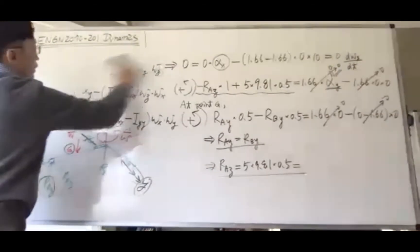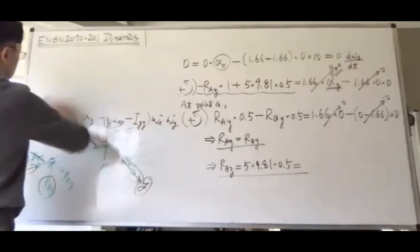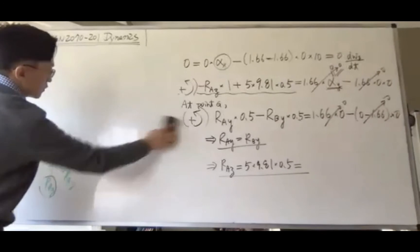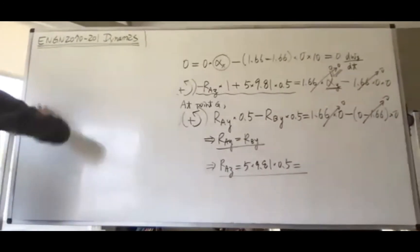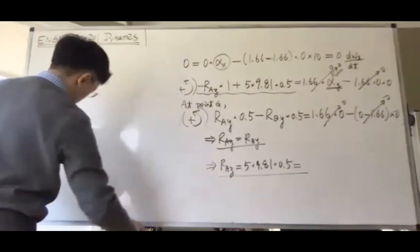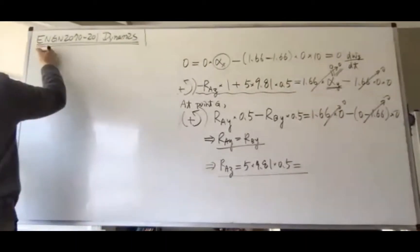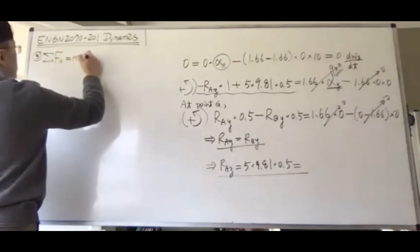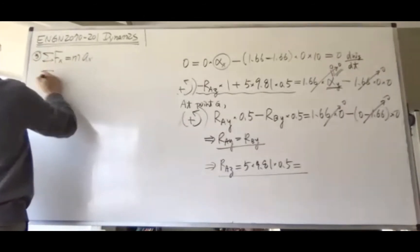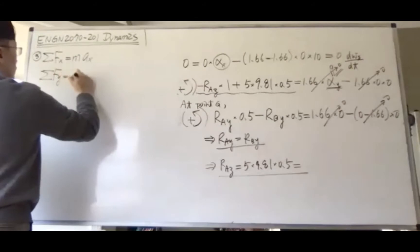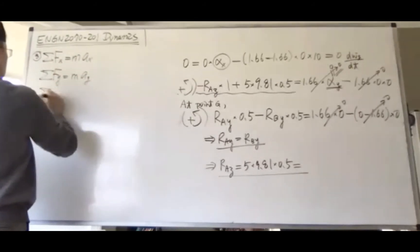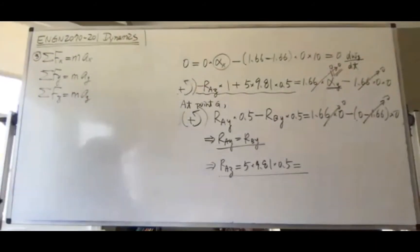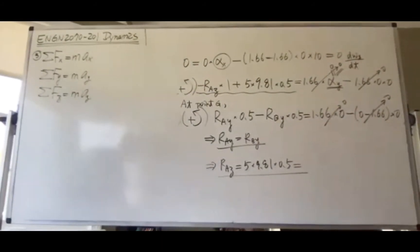Step three: we find the force equilibrium. F_x equals m times a_x, F_y equals m times a_y, F_z equals m times a_z. Then you use this relationship.